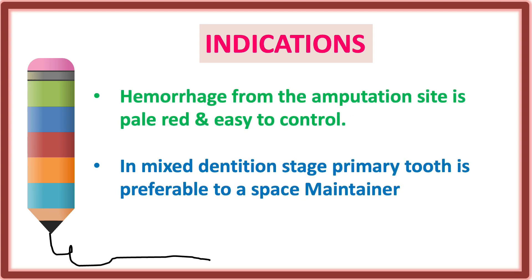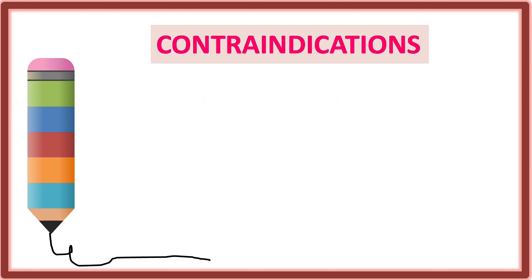Another indication is that hemorrhage from the amputation site is pale red and easy to control. In the mixed dentition stage, if it is important to retain a primary tooth as a space maintainer, we will perform pulpotomy so that it acts as a space maintainer until the permanent dentition develops.